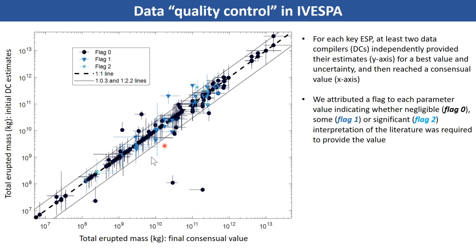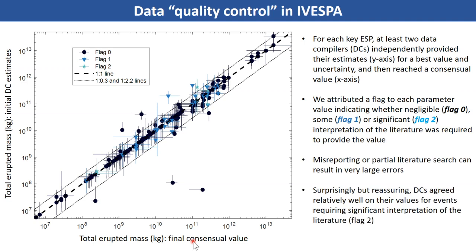Looking at the light blue stars, there is generally good agreement between initial estimates and the final consensual value, which means that reassuringly, data compilers tended to agree even when there was significant interpretation to do.